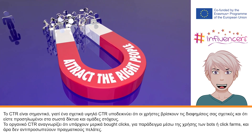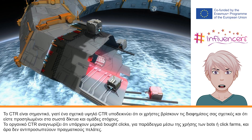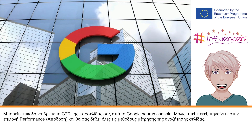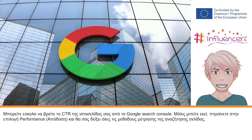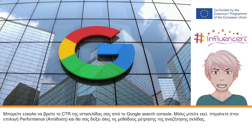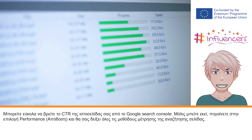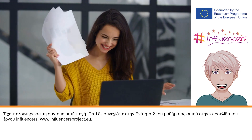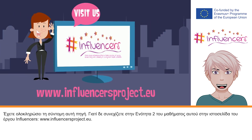Organic CTR acknowledges that there are some bot clicks — for example, through the use of bots or click farms — and therefore do not represent actual customers. You can easily find out your website CTR from Google Search Console. Once you are on Google Search Console, go to Performance and it will display all the website search metrics. You have now completed this short resource. Why not move on and check out Unit 2 of this module on the Influencers Project website at www.influencersproject.eu.